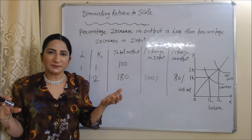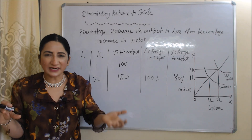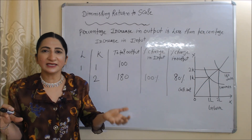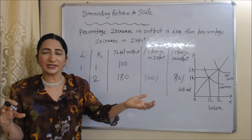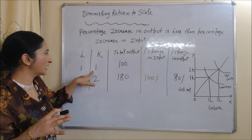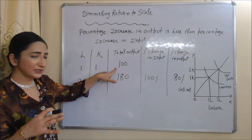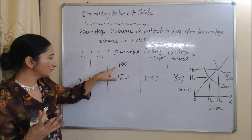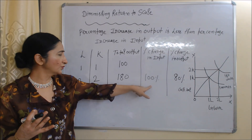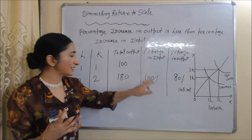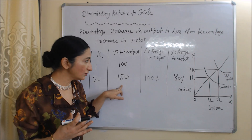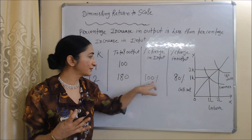Now we will see diminishing returns to scale. When the percentage increase in output is less than the percentage increase in input, it is called diminishing returns to scale. Here you can see one labor and one capital giving 100 units of output. When we increase both inputs from one to two, output increases from 100 to 180 units. Percentage change in input is 100%, but percentage change in output is only 80% — output changed from 100 to 180. So percentage change in output is less than percentage change in input.